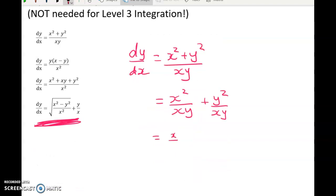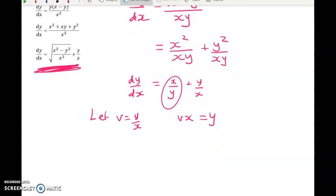So here we've got x over y plus y over x. And if we're on the lookout for a y over x pattern, this is our chance to spot that. If we let V equal y over x, then this is just V to the power of negative one. So if V equals y over x, then Vx is equal to y. And this is exactly what we had in the last video.